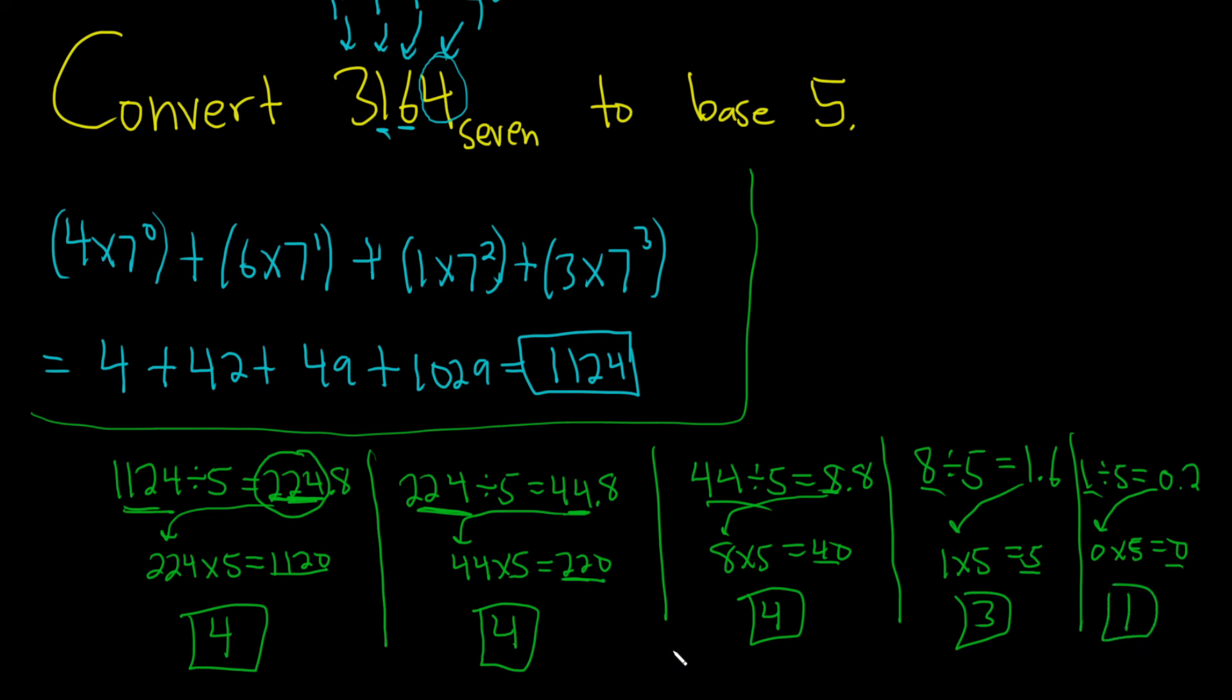Now just write it backwards. 1, 3, 4, 4, 4. So it's 13444 and this is in base 5 is equal to 3164, and this is in base 7. Boom, there it is. I hope this video has been helpful.